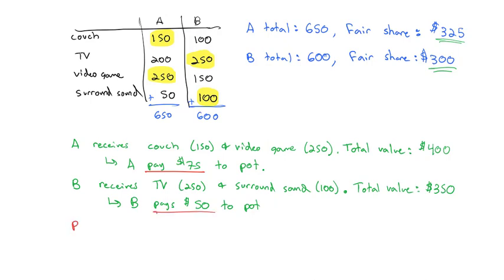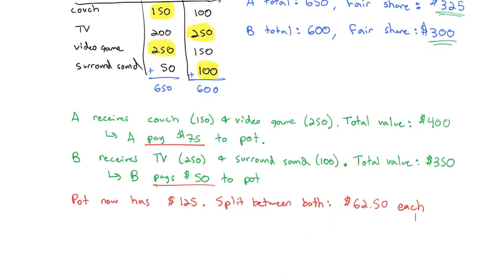This is the initial allocation. But what I want to notice is $75 was paid into the pot and $50 was paid into the pot. The pot now has $125 in the pot. So this $125 needs to be split evenly between the parties. So if we split evenly between the both, that's going to be divided by two, $62.50 each is given back. It's almost like a refund.